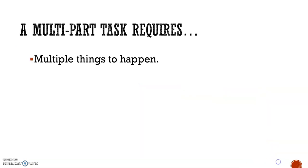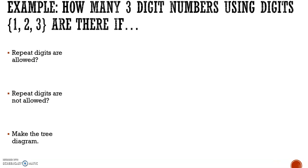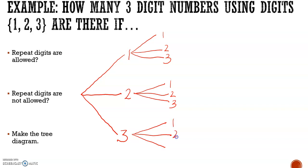A multiple-part task requires multiple things to happen. Example: how many three-digit numbers using digits 1, 2, and 3 are there if repeat digits are allowed, repeat digits are not allowed. We're going to start this by making a tree diagram. For our first number, it could be a 1, a 2, or a 3. After we choose that first number, again we have a 1, a 2, or a 3. And after that second number, then we also have the option for a 1, a 2, or a 3.